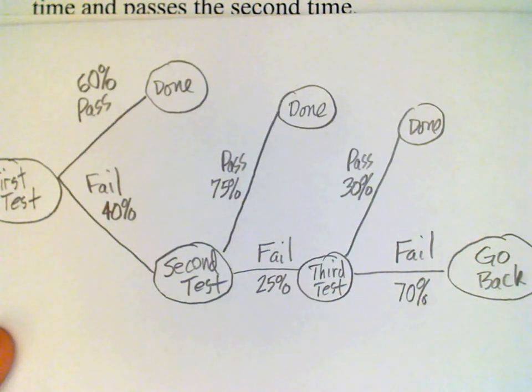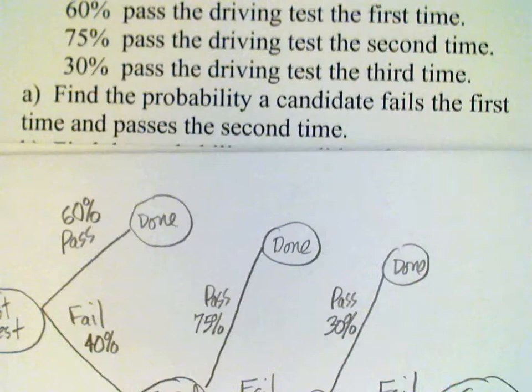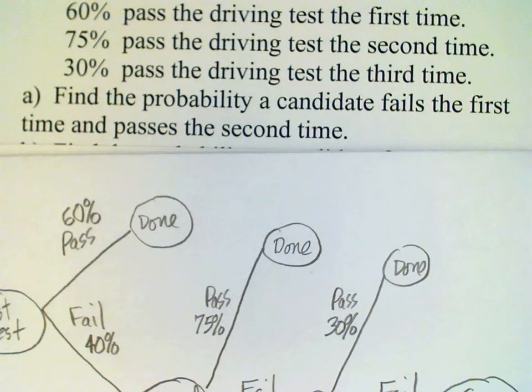So our tree diagram is complete, and now we can answer the question. The question was, find the probability that the candidate fails the first time and passes the second time.